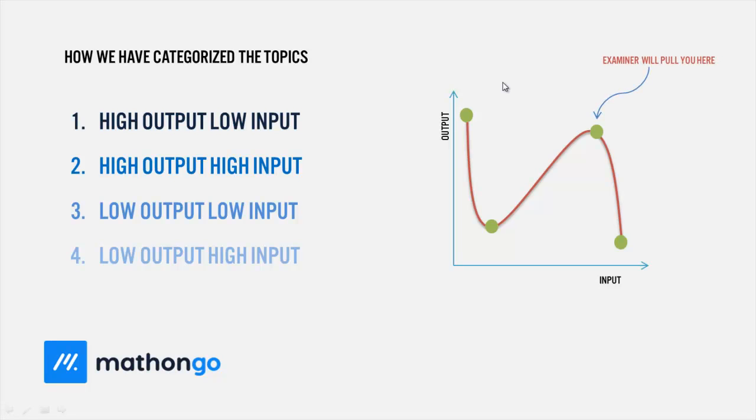Before we go further, the examiner will pull you into the second category: high output, high input. That is where they will test you - whether the student is sincere, has prepared thoroughly, has analyzed properly. So the examiner will try to put maximum questions from this particular bracket. You should be very strong at this particular segment of chapters. Mind you, all are important for a high score.